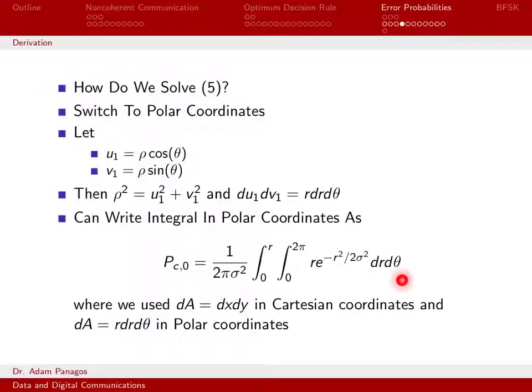Actually, there's a notation issue here. If I'm calling this r dr dθ, this should be r cos(θ) and r sin(θ), and r² equals U1² plus V1². We've transformed our two-dimensional integral in U1, V1 to a two-dimensional integral in r and θ by doing our change of coordinates. This is the integral I need to evaluate, and it lends itself to simplified mathematics for evaluating in closed form.